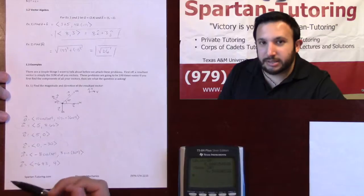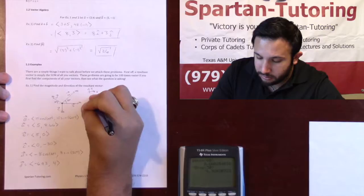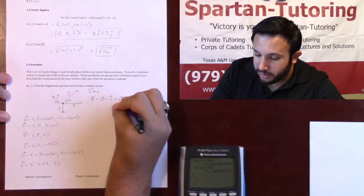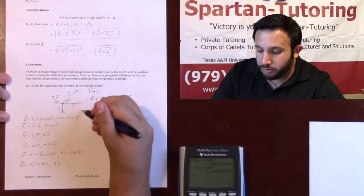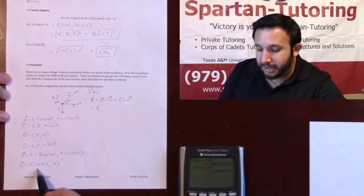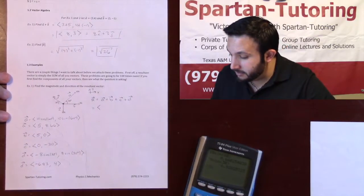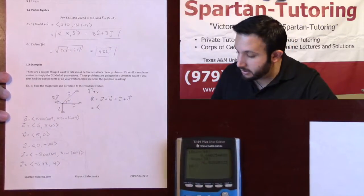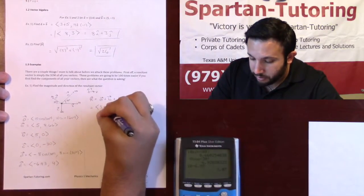Now that I have vectors A, B, C, and D, let's find the resultant vector. The resultant vector is literally just the sum of all four vectors. To find the x component of the resultant vector, you're just going to add the x components of all your vectors. So: 5 plus 5 is 10, C had 0, and D had minus 6.93. So we get 3.07 in the x.